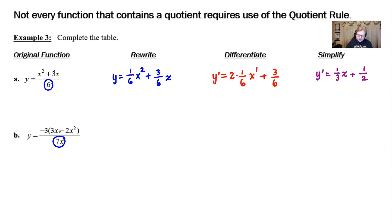Now in order to rewrite this, I'm going to suggest that we maybe distribute this negative three in the numerator because that will get rid of all of our parentheses. That'll be a very nice thing to have out of the way.